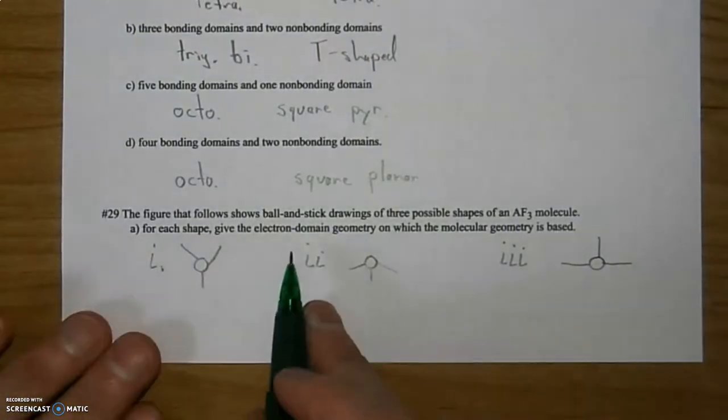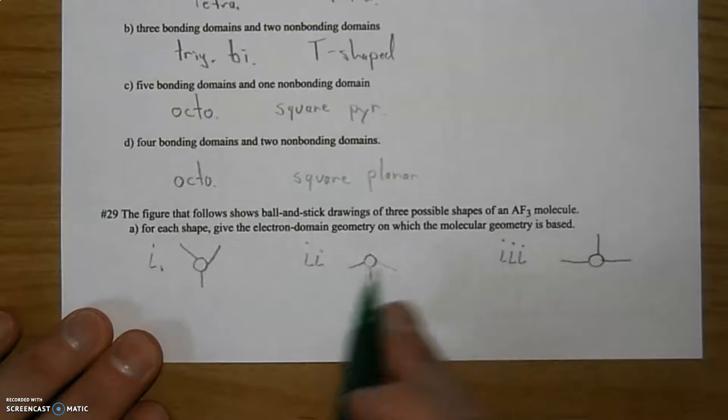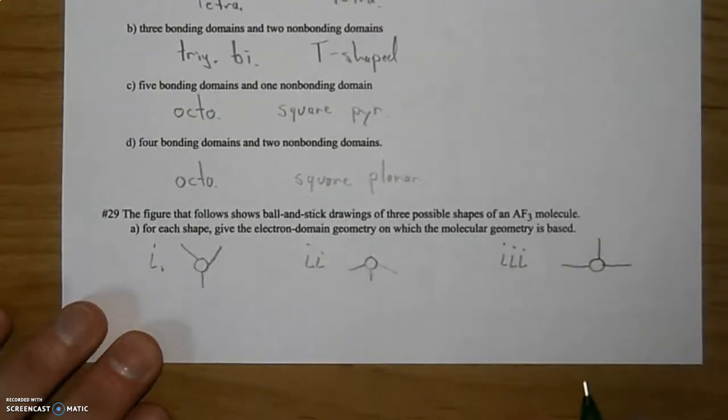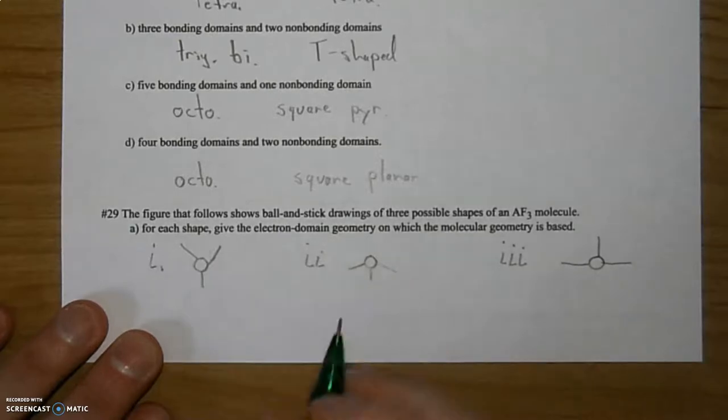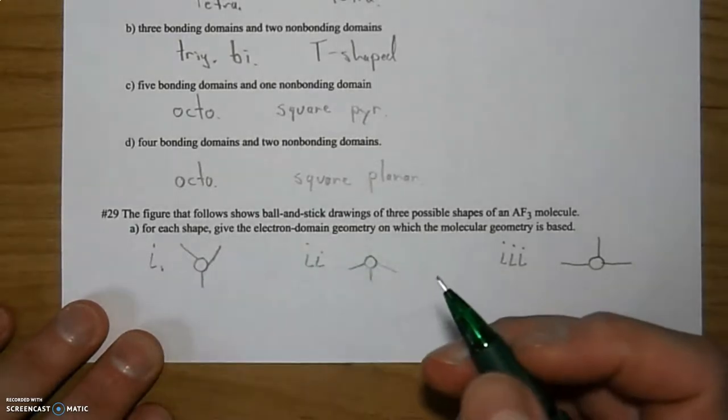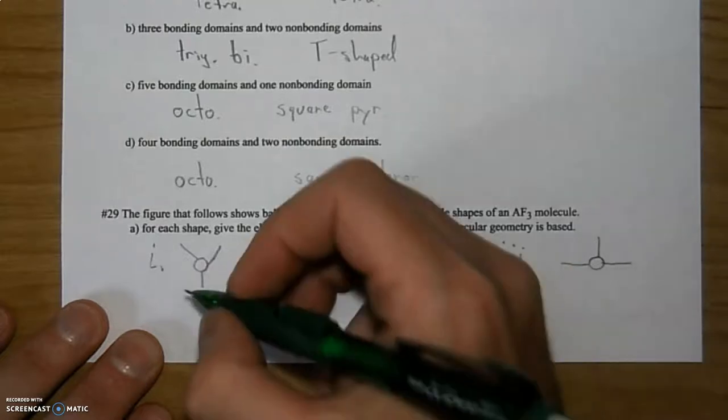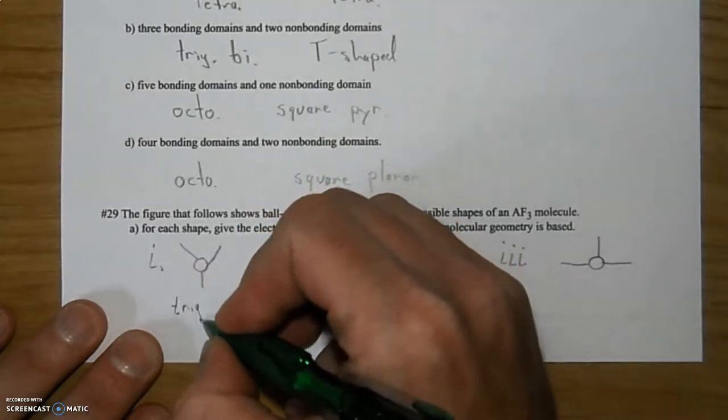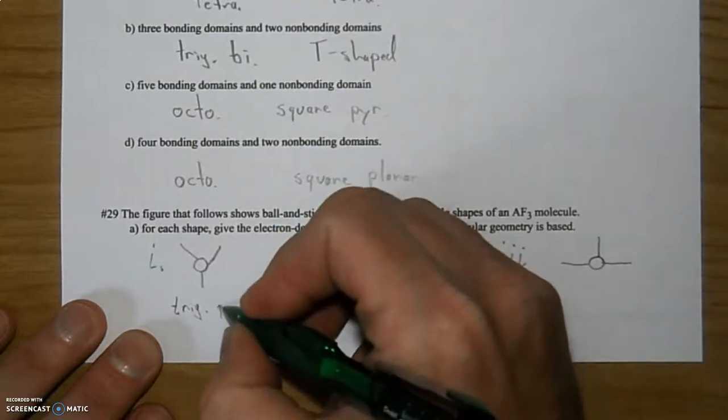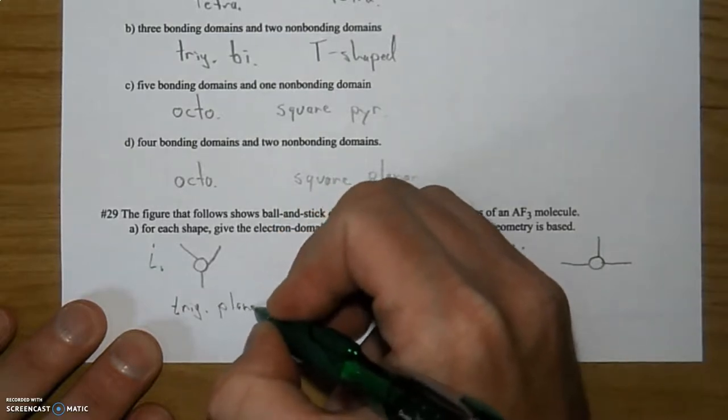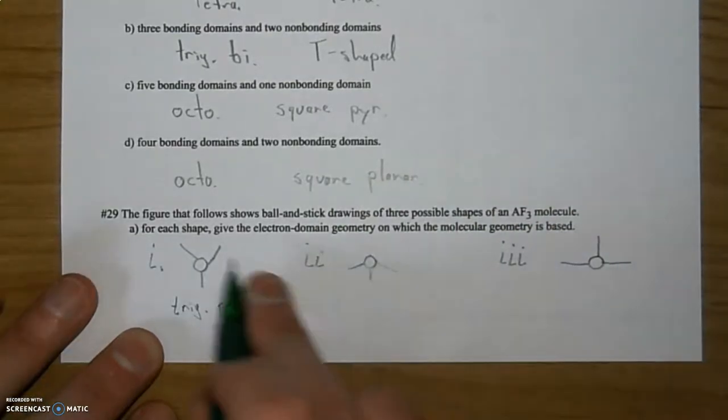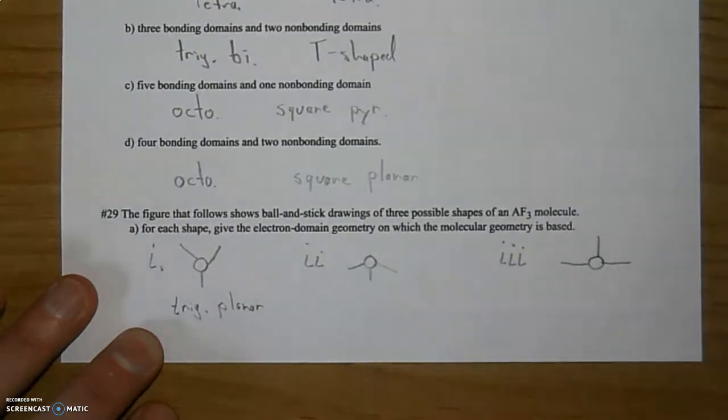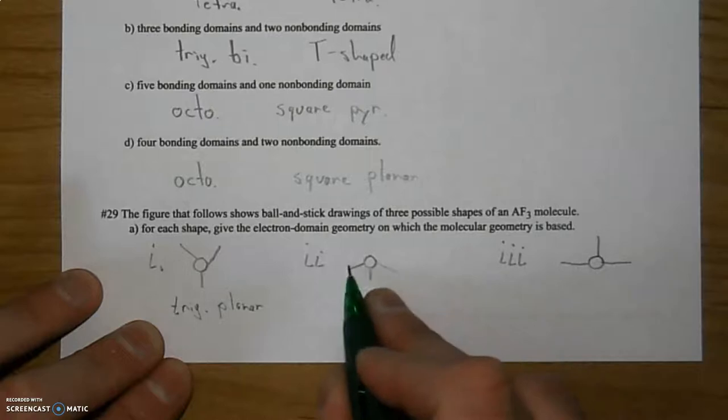This one goes up, this one goes that way, and this one goes that way. For each of the shapes, give the electron domain geometry on which this molecular geometry is based. I want the electron domain geometry for this one here. It's in a plane, there's three parts to it, there's no lone pairs. I'm going to call that one trigonal planar.